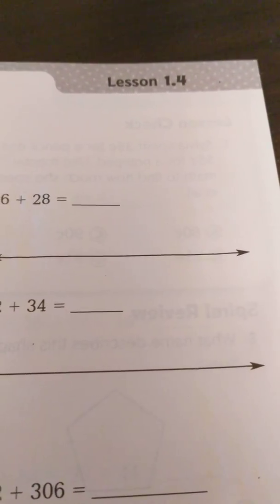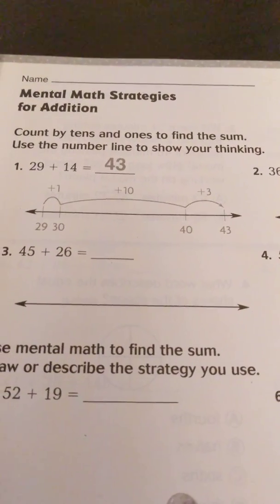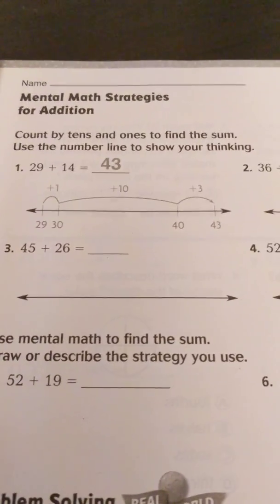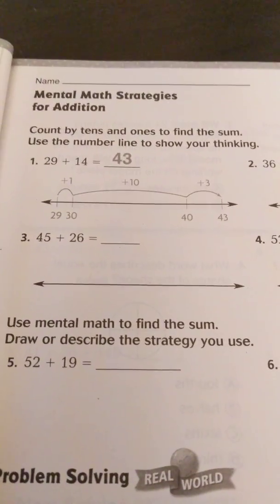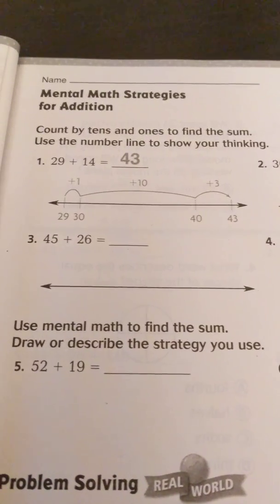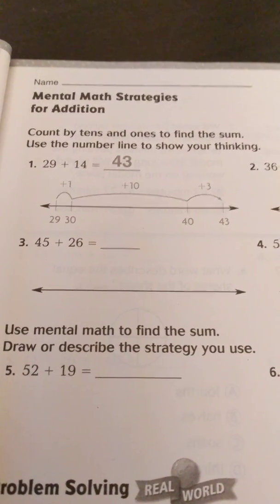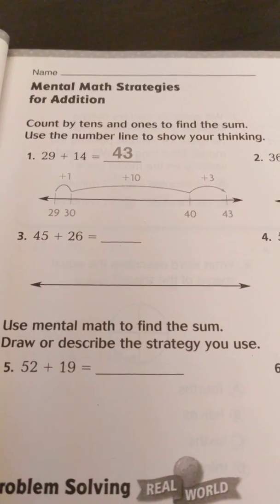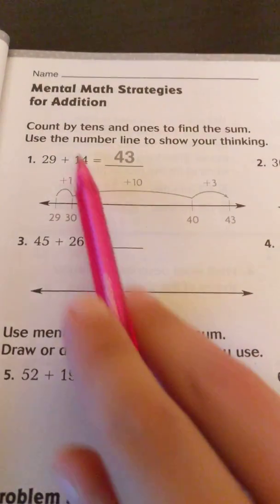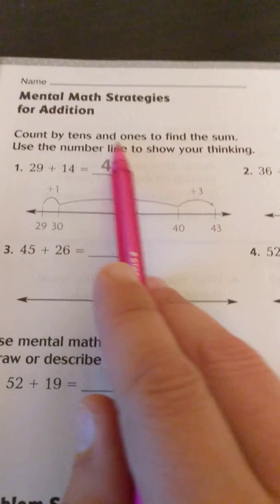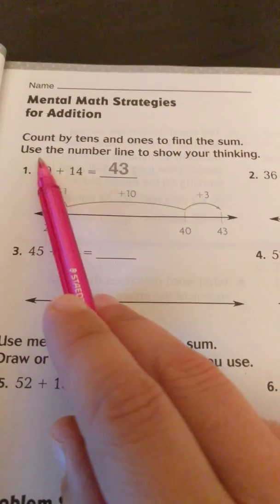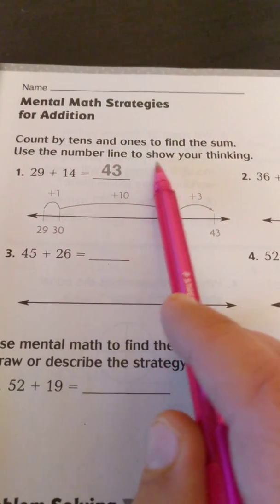This is 3rd Grade Go Math Lesson 1.4, and today we will use mental math strategies for addition. Mental math strategies are actually one of my favorite things to do, but they basically go to breaking apart numbers to make it easier to add or subtract, and today we're going to be using addition. The directions say count by tens and ones to find the sum, use the number line to show your thinking.